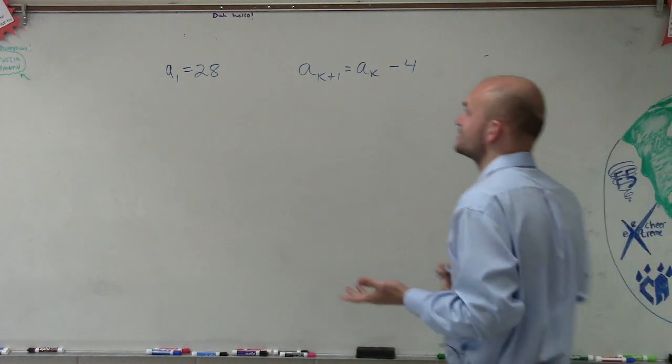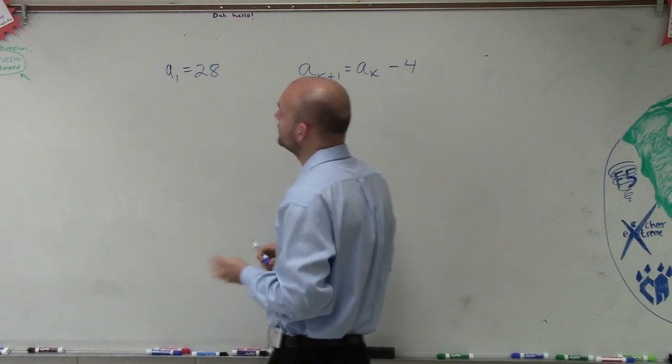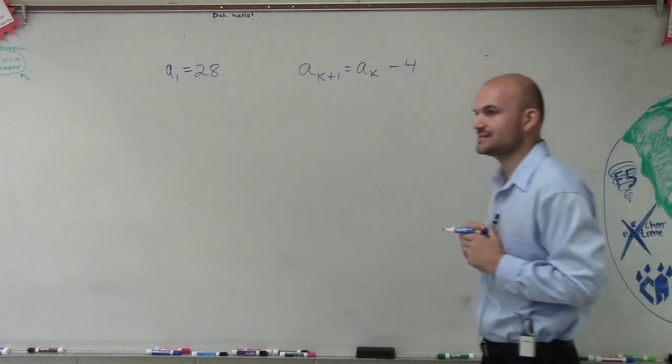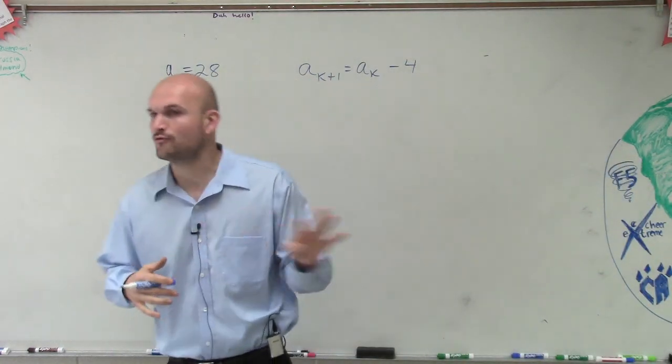So in this problem, it says A sub 1 equals 28, A sub k plus 1 equals A sub k minus 4. And what they're asking us to do is to find the first four terms.